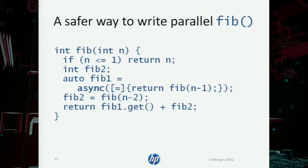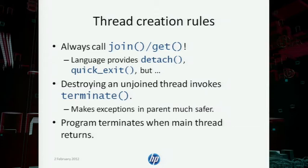There's another way: instead of explicitly creating a thread, I can invoke async to run a function that computes Fibonacci of n-1 in parallel and returns its result. I wait for it by calling get on the result of the async call, which is a future that provides a get operation to wait for the result. The basic rule is: you always want to call join or get to wait for threads you've created to complete.